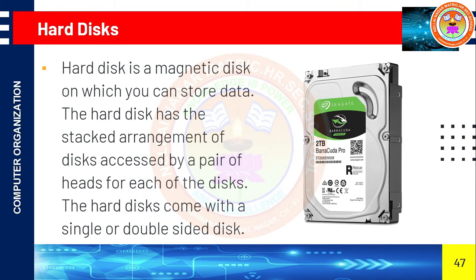The first one is hard disk. It is one of the important memory storage devices in our computer. A hard disk is a magnetic disk on which you can store data. The hard disk has a stacked arrangement of disks, accessed by a pair of heads for each disk. Stacked arrangement means data is stored sequentially — first data stored first, second data stored next, and so on, one by one.